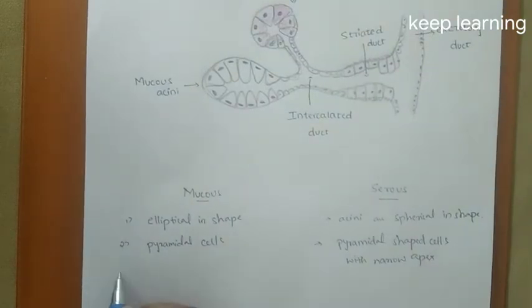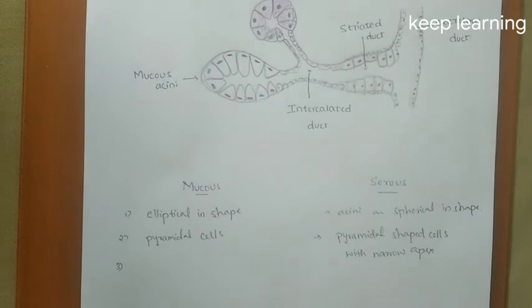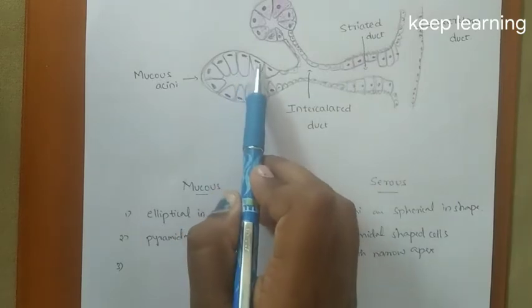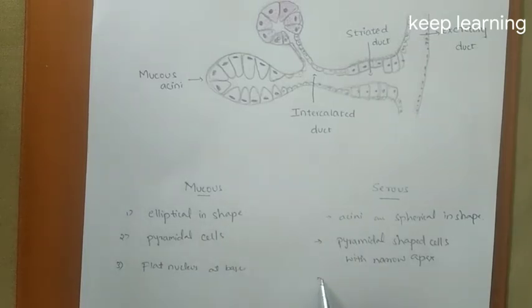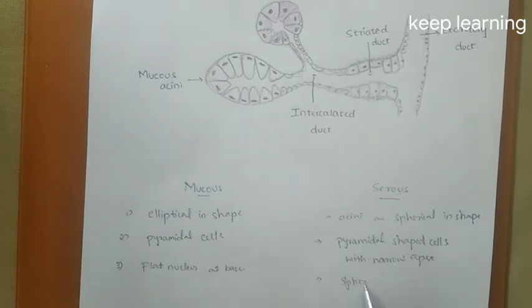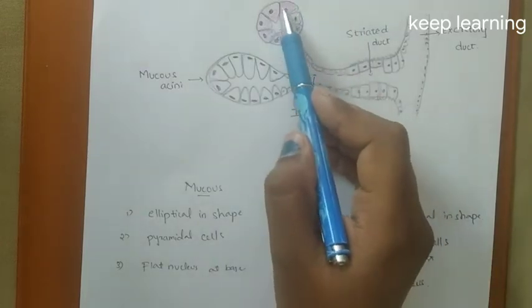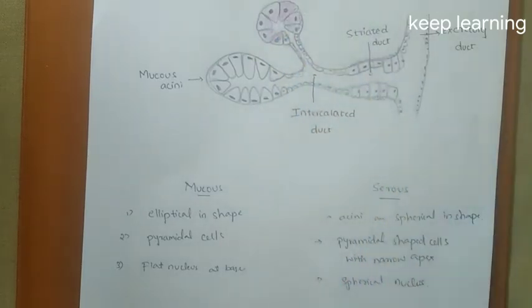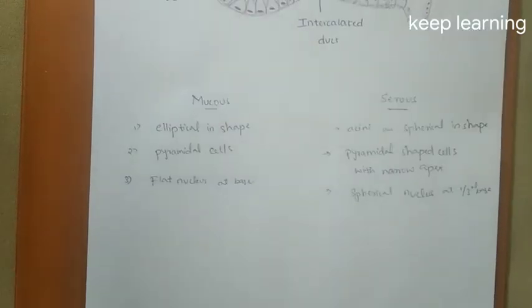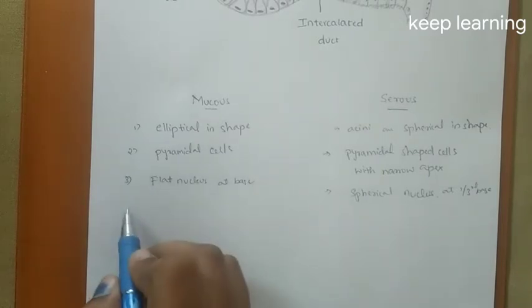Another difference: the mucous cells have a flattened nucleus at the base. These are the mucous cells and the nucleus is flattened and located at the base. The serous cell contains a spherical nucleus, also present near the basal one-third. The nucleus is not flattened — it is spherical and present in the basal one-third area.